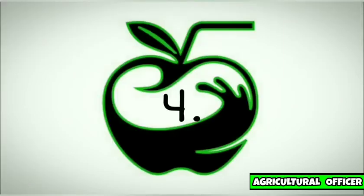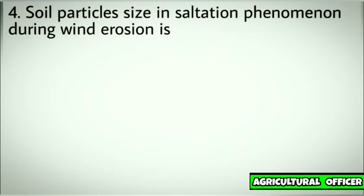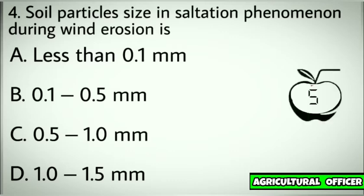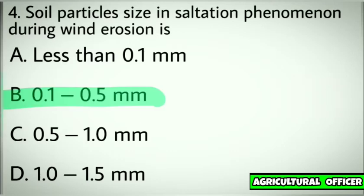Question number four. Soil particle size in saltation phenomenon during wind erosion is. Options: A. Less than 0.1 mm. B. 0.1 to 0.5 mm. C. 0.5 to 1 mm. D. 1 to 1.5 mm. Correct answer: B. 0.1 to 0.5 mm.